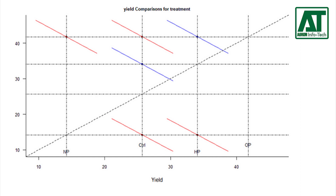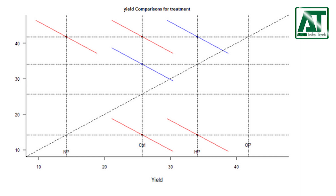If the vector does not cross the identity line, you can conclude there is a significant difference between the means. Lines crossing the diagonal in this chart are equivalent to non-significant differences between treatment means.